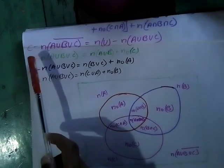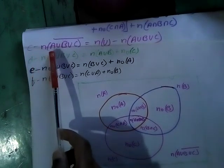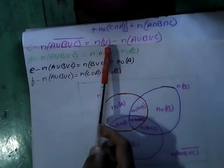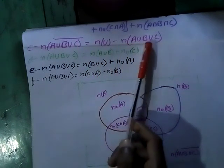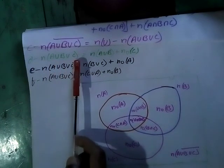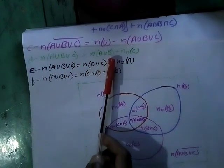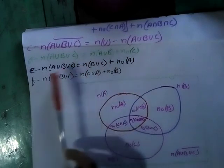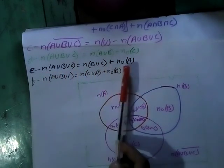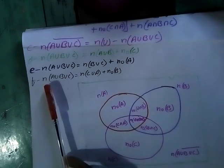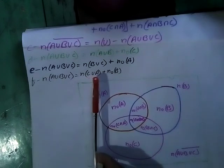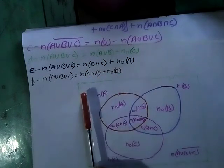Another formula: N(A∪B∪C)' = N(U) − N(A∪B∪C). Also, N(A∪B∪C) = N(A∪B) + N(C'), N(A∪B∪C) = N(B∪C) + N(A'), and N(A∪B∪C) = N(C∪A) + N(B').